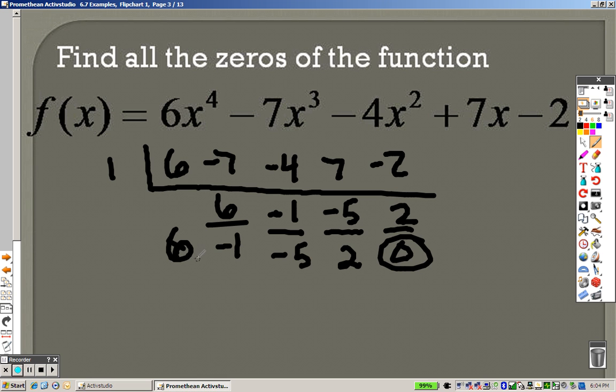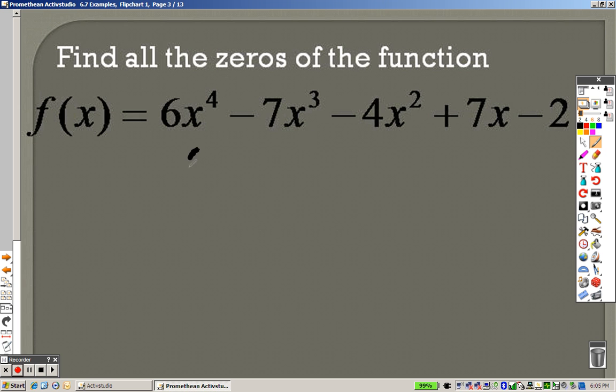So what does that mean? That means this is 6x cubed minus 1x squared, minus 5x, and plus 2. So, 6, negative 1, negative 5, 2. So I plugged in a 1, and I know a 1 works. Excellent. We'll come back to that.